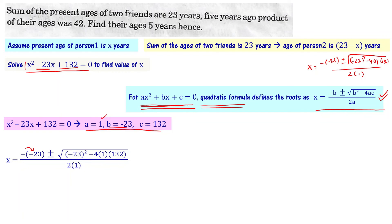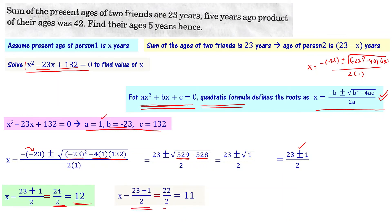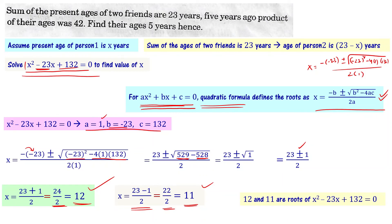Simplifying: (−23)² = 529, and 4 × 132 = 528. So x = (23 ± √(529 − 528)) / 2 = (23 ± √1) / 2 = (23 ± 1) / 2. Taking the plus sign: x = (23 + 1) / 2 = 24 / 2 = 12. Taking the minus sign: x = (23 − 1) / 2 = 22 / 2 = 11. So the roots of the quadratic equation are x = 12 and x = 11.